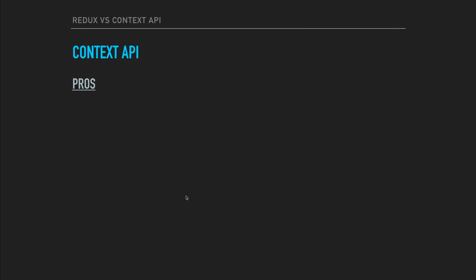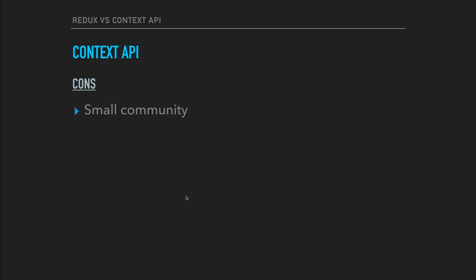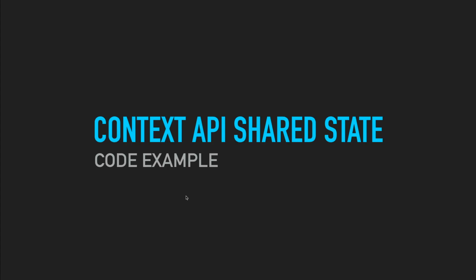So what about Context API? What are some good things about it? Well, it's part of React — actually built into React. It's been there in a partial way for a while, and now with new updates it's more usable for our app concept. The learning curve for Context API is pretty small, not too crazy to get up and running with it. The community support is growing, although it's small right now — it is growing rapidly since the update and it's gotten very popular very quickly. It's great for small to medium-sized apps; you can get global state up and running super quick with Context API. The cons: the community is small, so it's hard to find examples and tutorials — there's not many out there right now.